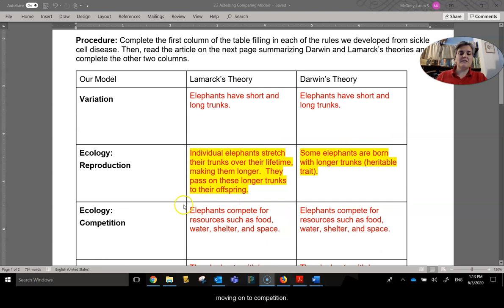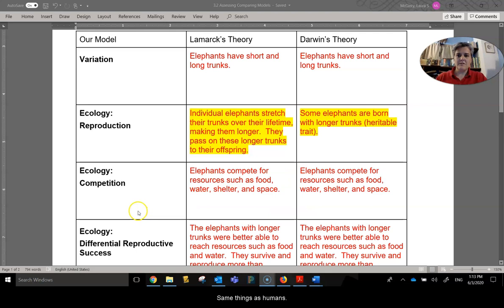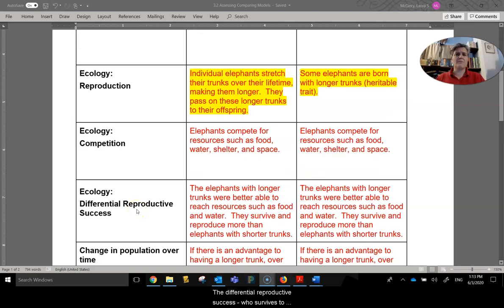Moving on to competition. Both Lamarck and Darwin agree that elephants are competing for the same things. They're competing for food, water, shelter, and space. Same thing as humans. The differential reproductive success. Who survives to make babies? So the elephants with the longer trunks are better able to get the resources that they need. So they're the ones that survive and are able to reproduce. There's no argument between Darwin and Lamarck's theory on this. They're both in agreement there.